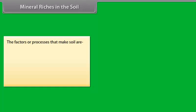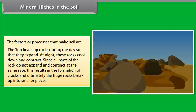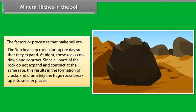The factors or processes that make soil are: The sun heats up rocks during the day so that they expand. At night, these rocks cool down and contract. Since all parts of the rock do not expand and contract at the same rate, this results in the formation of cracks and ultimately, the huge rocks break up into smaller pieces.